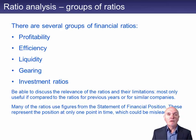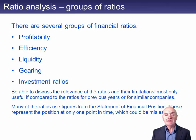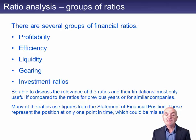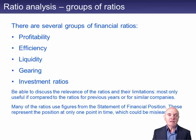The normal ratios divide into these categories: profitability, efficiency, liquidity, gearing, and investment ratios. You have to try to be able to say something sensible about these.